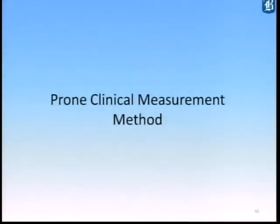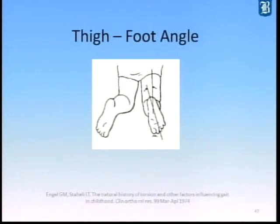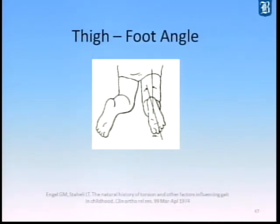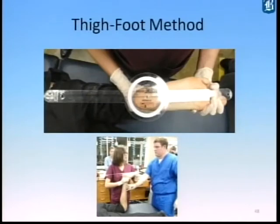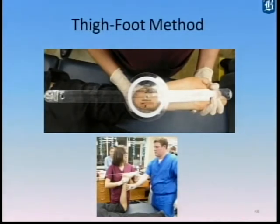The prone clinical method is also a technique I've utilized. It works very well in a pediatric setting because children are used to being on their abdomen face down. With the knee flexed to 90 degrees, you measure along the long axis of the foot, then correspondingly in line with the femur to give you your foot progression angle. Here at ASU, conducting the measurement — you can see the long arm of the goniometer from mid-calcaneus through mid-second ray, and then following the femur gives you the foot progression angle.